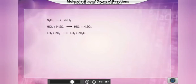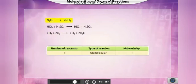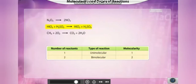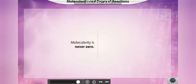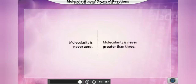The molecularity of a reaction can be one, two, or three depending on the number of reactants colliding at a time. A reaction with one reacting molecule is known as unimolecular; with two reacting molecules, bimolecular; and with three reacting molecules, trimolecular. Molecularity is never zero for any reaction, as molecules must disintegrate or combine for a reaction to occur. It is not expected to be greater than three, because it is highly improbable that more than three reactants collide simultaneously.